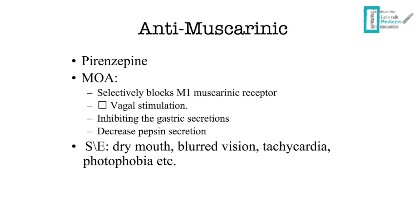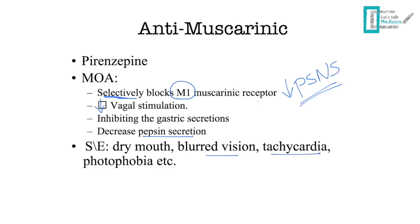The second class is the anti-muscarinic drug pirenzepine. Its mechanism of action is selective blockade of M1 muscarinic receptors, which decreases parasympathetic nervous system activity, reducing vagal stimulation and inhibiting gastric and pepsin secretion. Because it opposes the parasympathetic system in the gastric mucosa, side effects are sympathetic in nature: dry mouth, blurred vision, tachycardia, and photophobia.